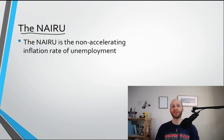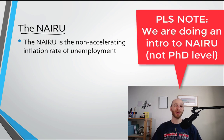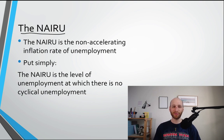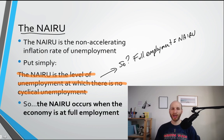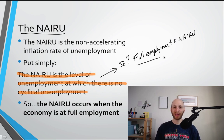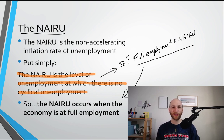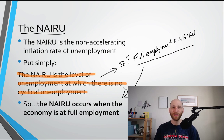The NAIRU stands for the non-accelerating inflation rate of unemployment. We could go into a huge amount of detail on this topic — entire economics PhDs are written on subjects such as this. But for our purposes, we're going to keep it relatively simple. The NAIRU is the level of unemployment at which there is no cyclical unemployment. The NAIRU occurs when an economy is at full employment. Full employment occurs at the NAIRU, and the key thing is that there is no cyclical unemployment at the NAIRU — there's structural, frictional, and seasonal unemployment, but no cyclical unemployment.